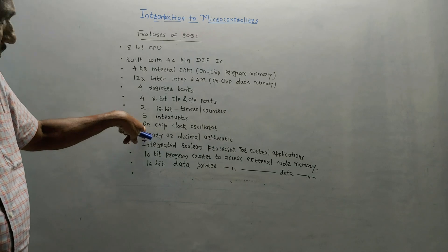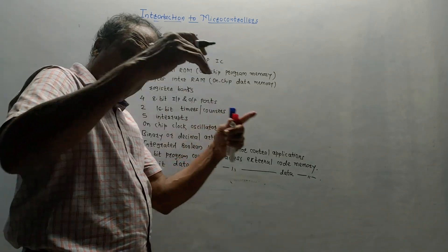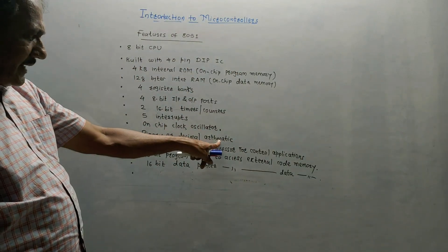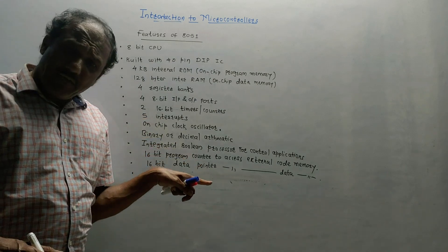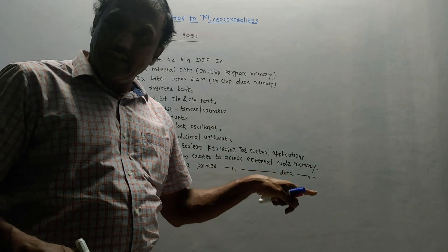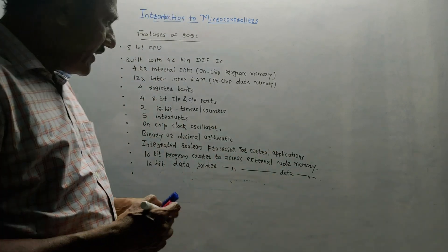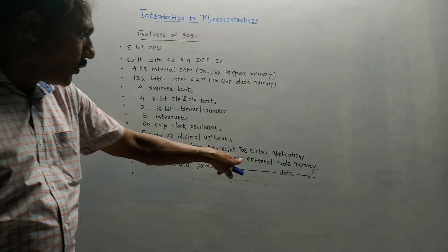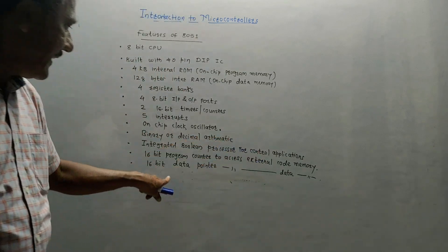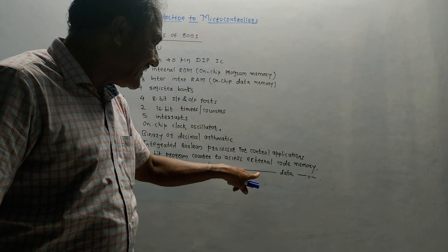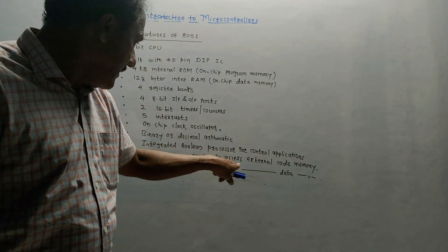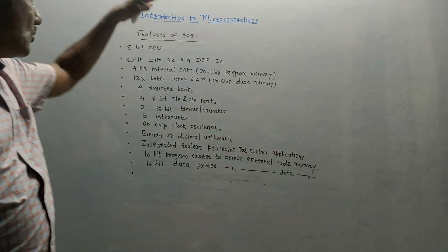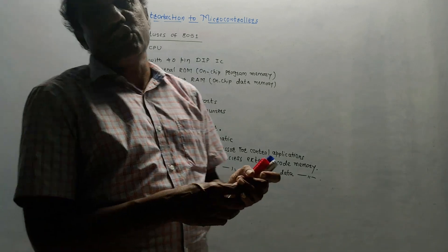It has an on-chip clock oscillator, which can also be used to generate clock signals for other applications. It performs binary or decimal arithmetic. It is basically an integrated Boolean processor, performing processing operations required for control applications. It has a 16-bit program counter to access external code memory and a 16-bit data pointer to access external data memory.